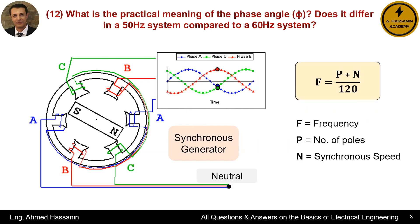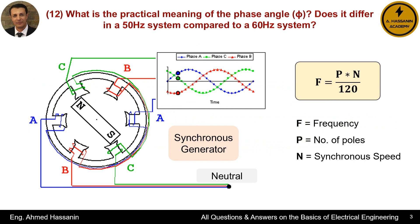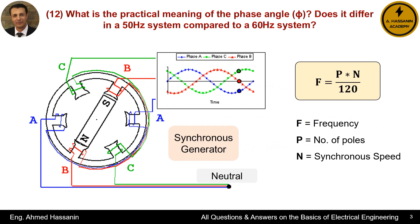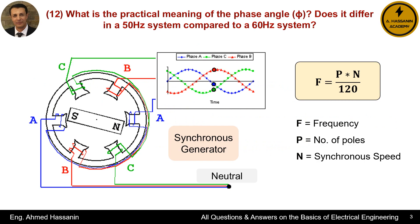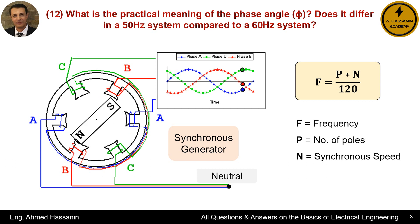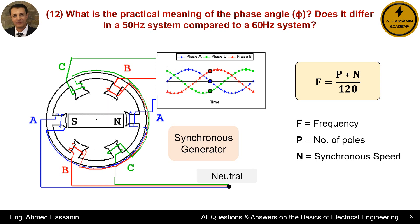To achieve a frequency of either 50 Hz or 60 Hz, the synchronous generator must rotate at a constant synchronous speed. The rotation of the rotor within the synchronous generator, along with its proximity to or distance from the three-phase poles A, B, and C, produces an alternating current in the form of a sinusoidal wave. One full rotation of the rotor represents a complete cycle, consisting of a positive half cycle and a negative half cycle.